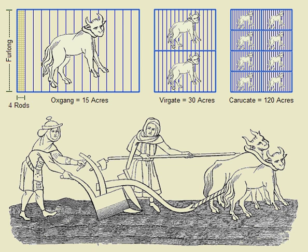The most common use of the acre is to measure tracts of land. Traditionally, in the Middle Ages, an acre was defined as the area of land that could be ploughed in one day by a yoke of oxen.